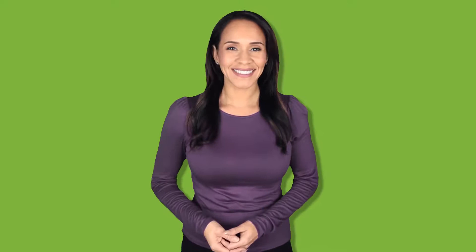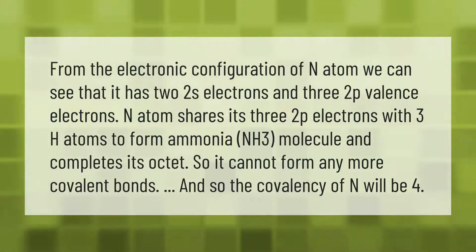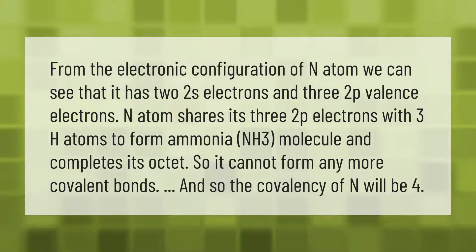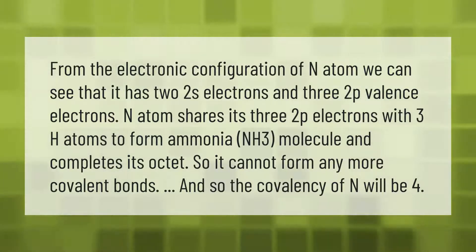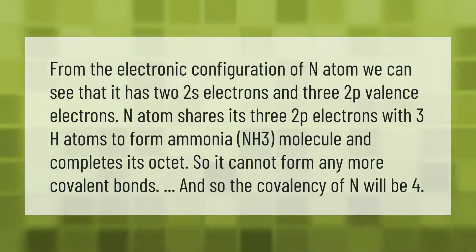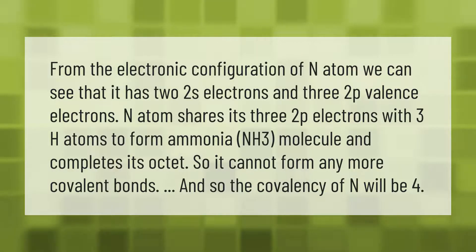From the electronic configuration of the N atom, we can see that it has two 2s electrons and three 2p valence electrons. The N atom shares its three 2p electrons with three H atoms to form ammonia, NH3 molecule, and completes its octet, so it cannot form any more covalent bonds. Therefore, the covalency of N will be four.